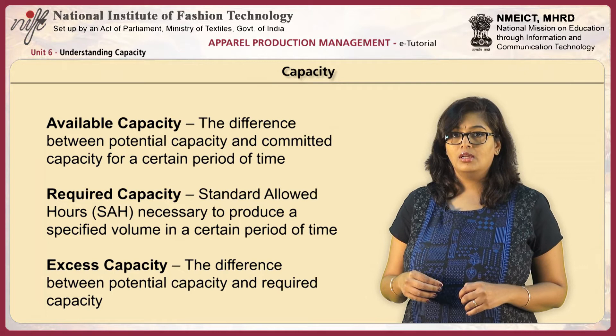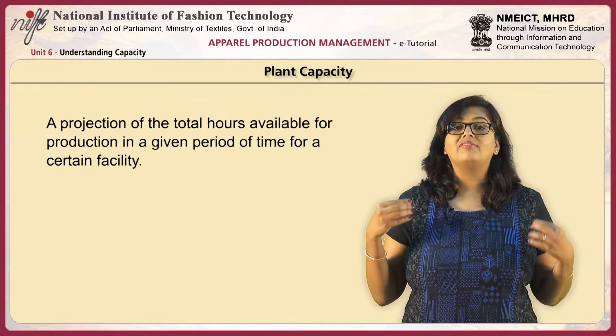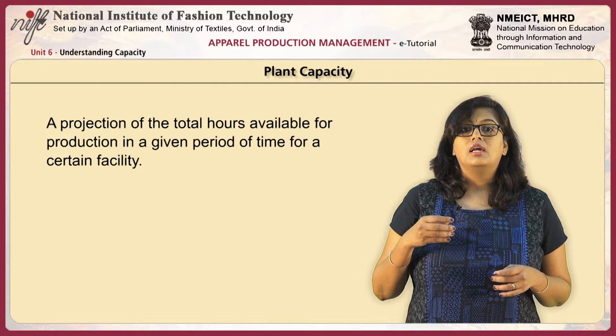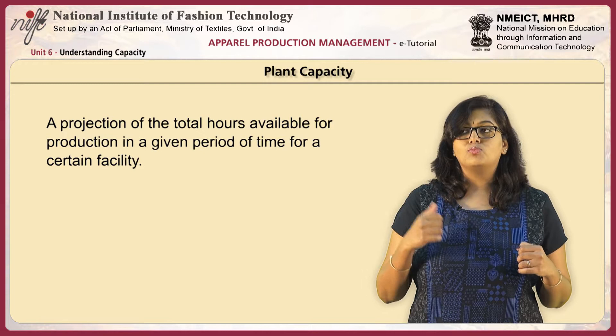To understand plant capacity, we basically need to have a projection of the total hours available for production in a given period of time for a certain facility. Let us take an example and see how to calculate the plant capacity. Let us move on to the whiteboard for the calculation.